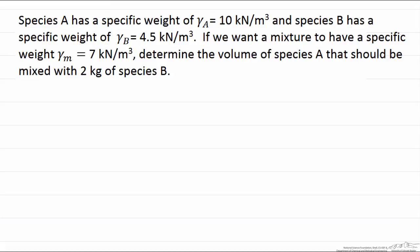We want to form a mixture that has a specific weight of 7 kN per m³ and to do that we are going to determine the volume of species A that should be mixed with 2 kg of species B.